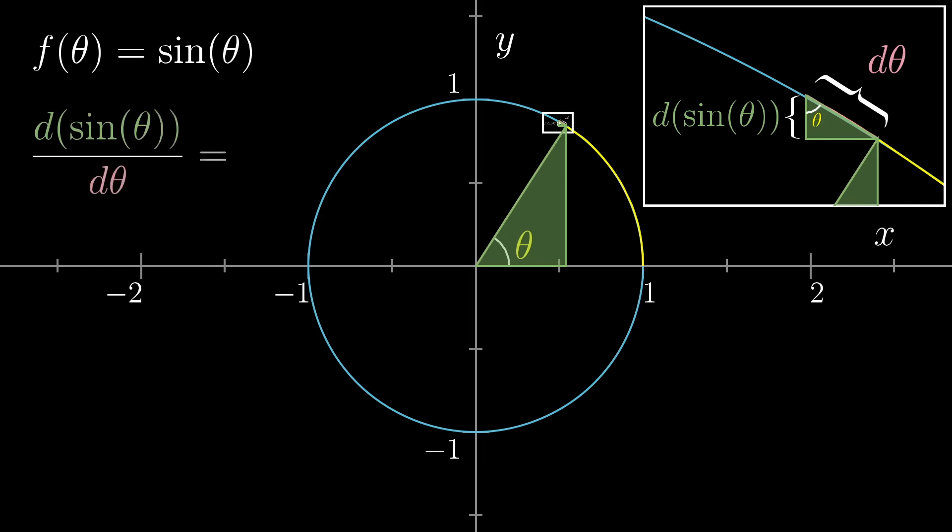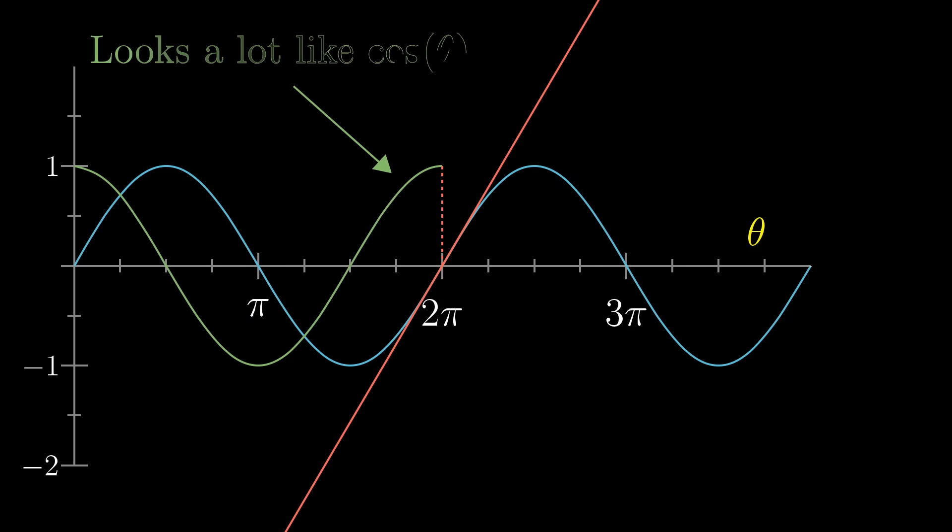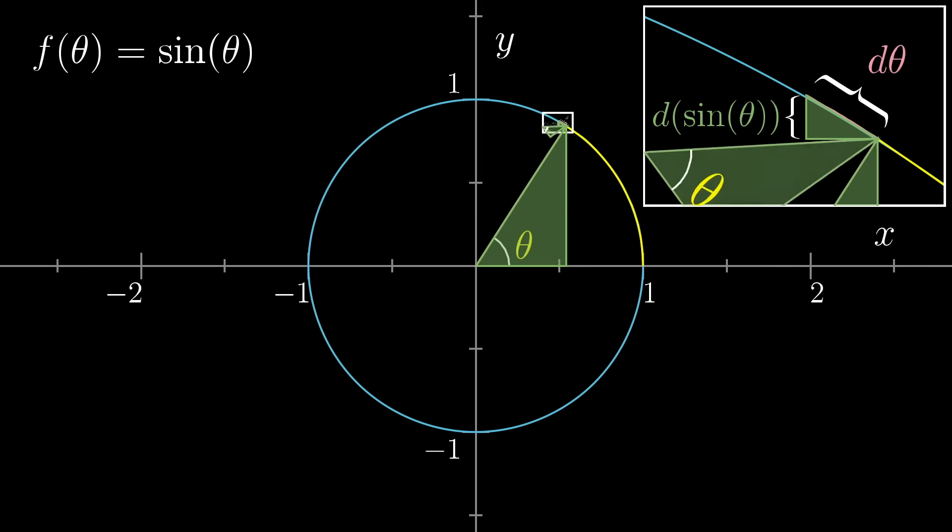Now think about what the derivative of sine is supposed to mean. It's the ratio between that d sine of theta, the tiny change to the height, divided by d theta, the tiny change to the input of the function. And from the picture, we can see that that's the ratio between the length of the side adjacent to the angle theta, divided by the hypotenuse. Well, let's see. Adjacent divided by hypotenuse? That's exactly what the cosine of theta means. That's the definition of the cosine. So this gives us two different really nice ways of thinking about how the derivative of sine is cosine. One of them is looking at the graph and getting a loose feel for the shape of things based on thinking about the slope of the sine graph at every single point. And the other is a more precise line of reasoning, looking at the unit circle itself.